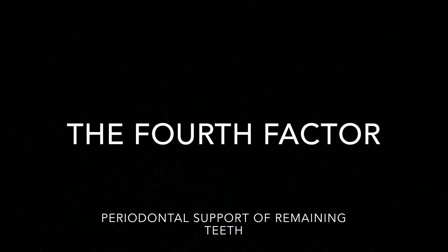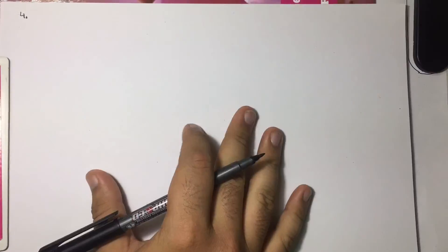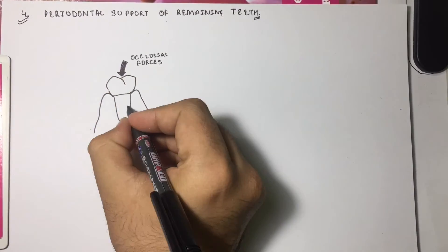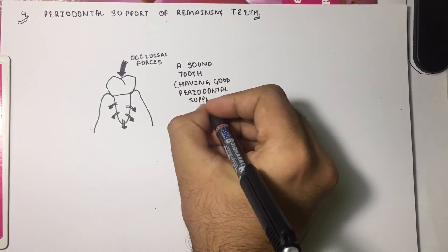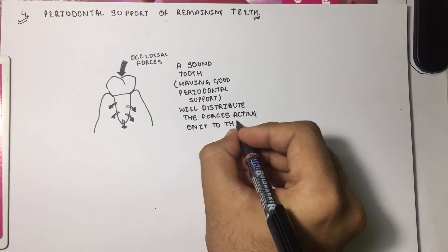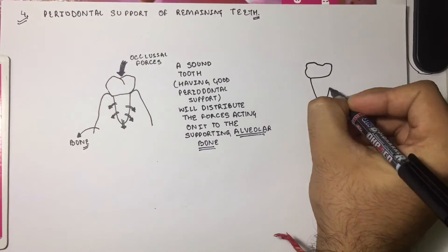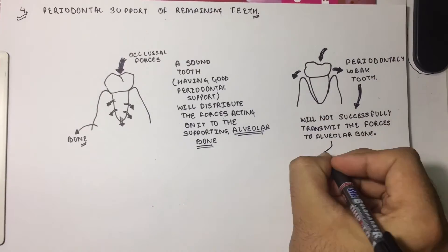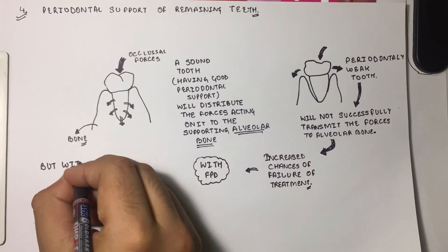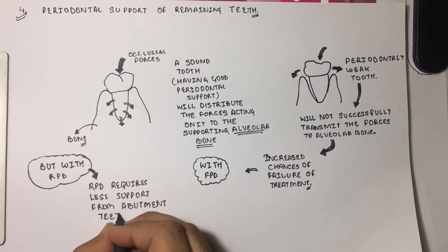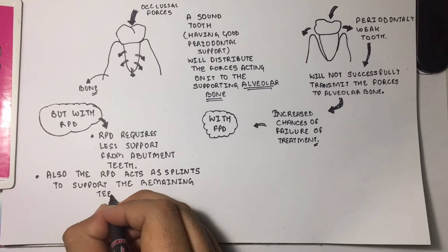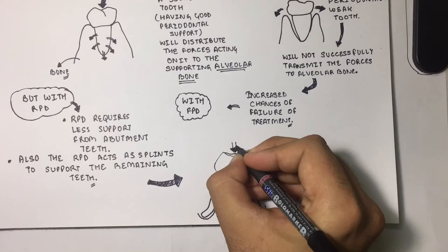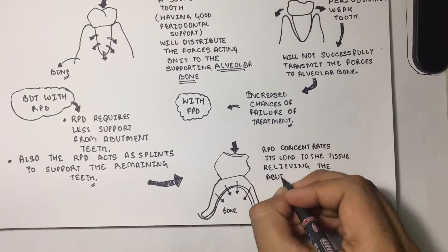The fourth factor is the periodontal support of the remaining teeth. The periodontal membrane is the structure which transfers all the load from the teeth to the underlying bone. A sound tooth with good periodontal support will distribute forces to the supporting alveolar bone. A periodontally weak tooth will not transmit forces successfully, increasing the chances of FPD failure. With an RPD, less support is required from the abutment teeth, and the RPD acts as a splint, concentrating its load to the tissue and relieving the abutment from excessive stress.